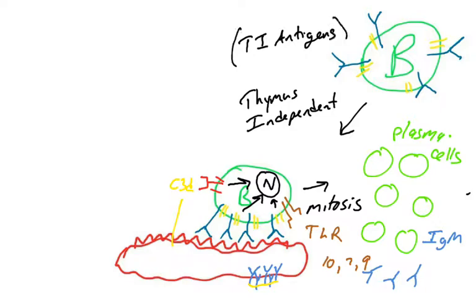Some antigens that provoke an immune response are called T-I antigens, thymus-independent antigens. The B-cell was able to basically check itself, give permission to itself using its own receptors, and didn't need any help from T-cells.